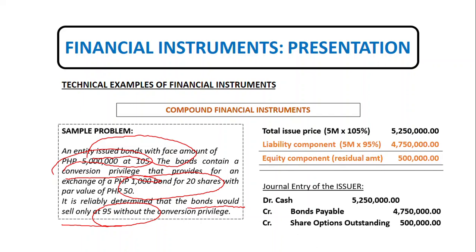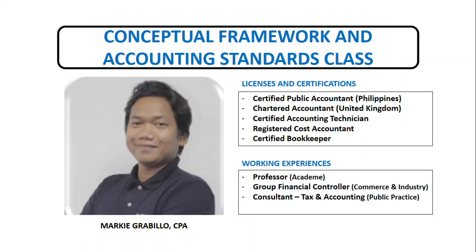The fair value of the option comprises its time value and its intrinsic value, if any, and this option has value at initial recognition even if it is out of the money. That covers everything for financial instruments presentation. I hope everyone has learned a lot regarding IAS 32 presentation of financial statements and how to classify financial instruments based on their structure. See you next meeting. Thank you.